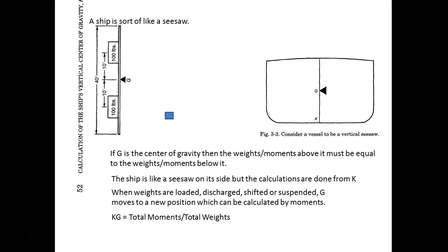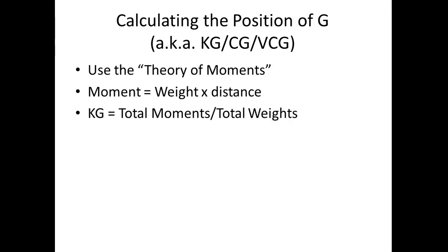The theory of moments says that KG — the distance from the keel to the center of gravity — is equal to the total moments divided by the total weights. A moment is going to be a weight in tons times a distance — in this case, the distance from the keel to the center of gravity of whatever we're talking about, whether it's the whole ship or an individual cargo. So, if we want to calculate KG, we take the total moments divided by the total weights.